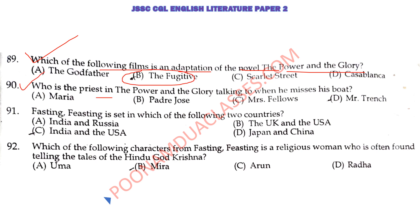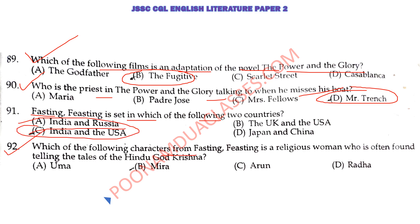Who is the priest in The Power and the Glory talking to when he faces his initial scene? Mr. Tench, the dentist — that is the right answer. Fasting Feasting is set in which of the following two countries? India and USA — perfect, right answer, option C. Which of the following characters from Fasting Feasting is a religious woman who is often found telling the tales of Hindu god Krishna? The answer is Aunt Mira — religious Mira Masi — who tells Uma all the tales of Krishna and takes her to the ashram, allowing her to escape the strict environment at home.